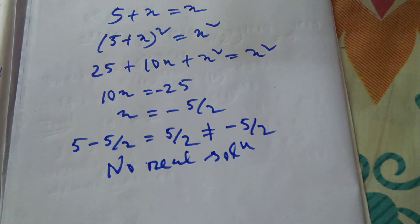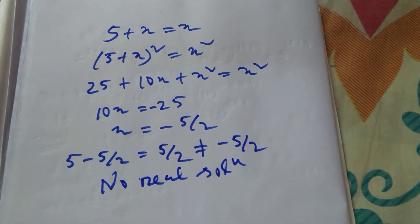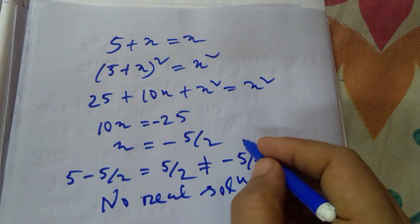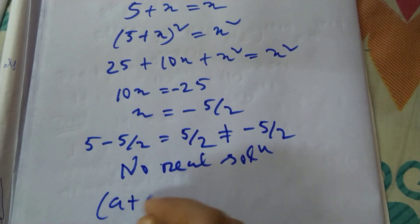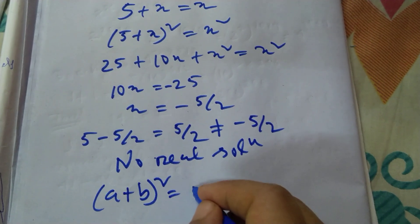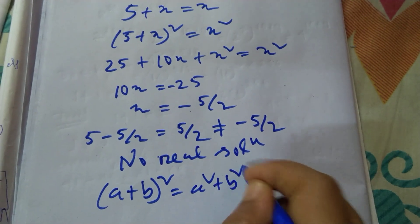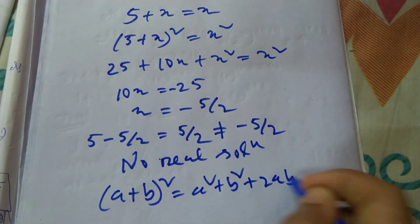Thanks for watching friends, I hope it is clear. Must remember the formula: a plus b whole square. This important formula is (a + b)² = a² + b² + 2ab. This formula I applied in here.